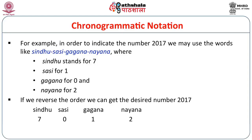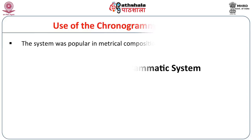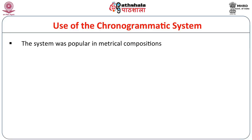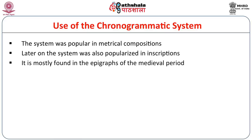This particular system is known as 'Ankanam Vamato Gati' — it is to be read from right to left, giving 2, 1, 0, 7. If you reverse the order, you get the number 2017. Use of the chronogrammatic system was popular in metrical compositions, where writers used such chronograms in their works. Later on, the system was also popular in inscriptions. From 10th and 11th century inscriptions of India, we find the use of chronogrammatic system, mostly in epigraphs of the medieval period, from the 10th-11th century to the 17th-18th century.